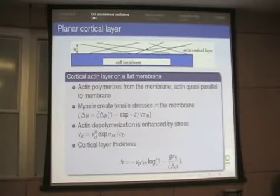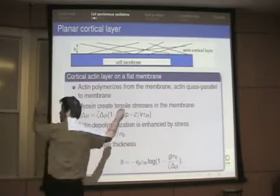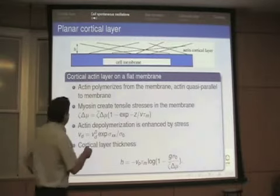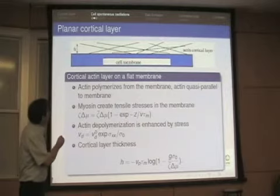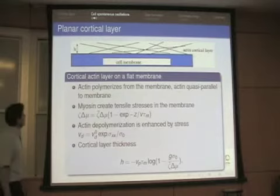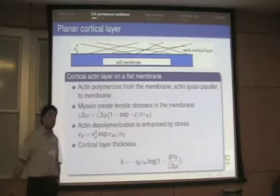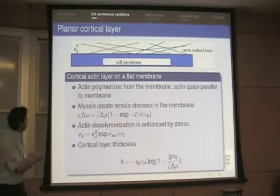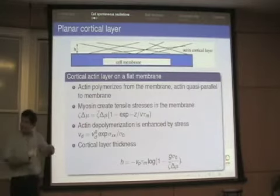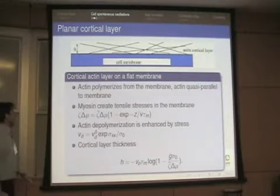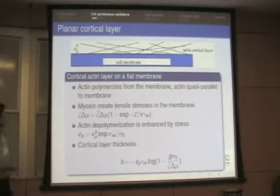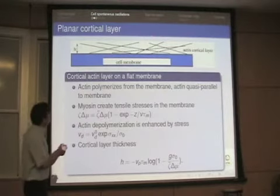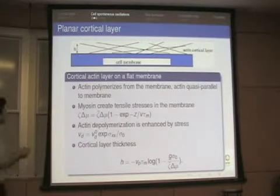The active stress tends to contract the gel — it acts like a tension pulling on the gel. Experiments on systems like Listeria show that applying stress enhances depolymerization. Polymerization occurs on the surface; depolymerization occurs throughout the layer, and we approximate it as occurring only at the outer surface of the layer, increasing with stress. This fixes the thickness of the cortical layer: when the layer is thin, the stress is small and depolymerization is slow, so the layer grows. At a certain thickness, polymerization velocity exactly balances depolymerization velocity.